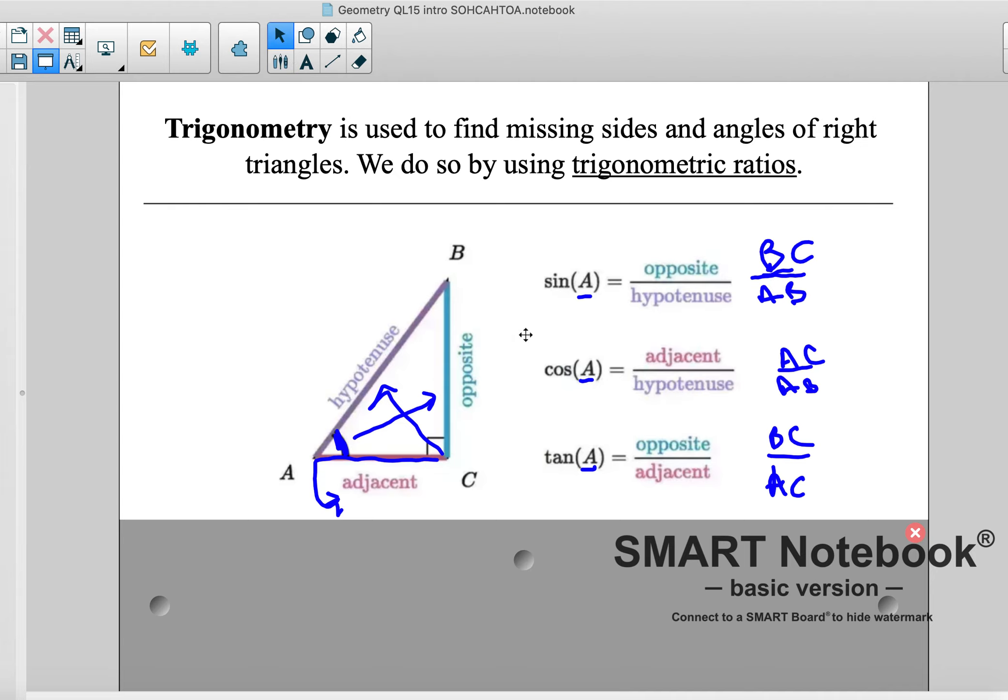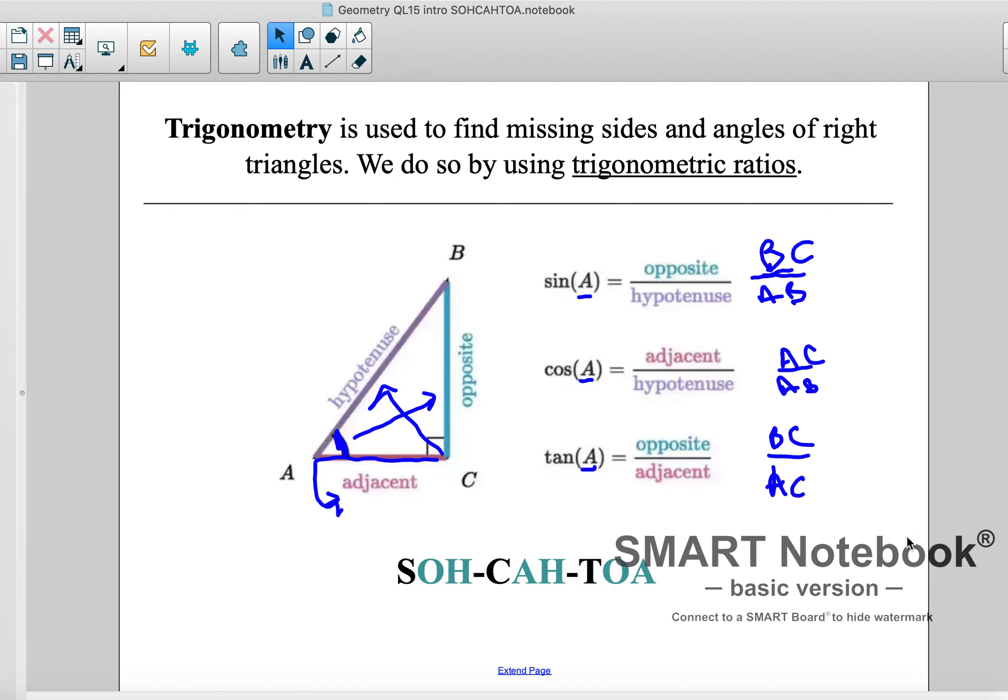And there's a cool little saying that we use to remember this, and it's SOHCAHTOA. And the reason we say SOHCAHTOA is because sine is opposite over hypotenuse, cosine is adjacent over hypotenuse, and tangent is opposite over adjacent. So sine is opposite over hypotenuse, just like we have up here.